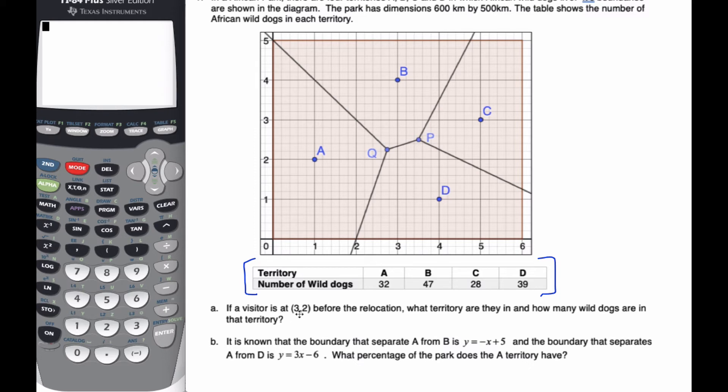If a visitor is at (3,2) before the relocation, what territory are they in and how many wild dogs are in that territory? Well, they are here, and so they are in territory D, and so there are 39 wild dogs in there. It is known that the boundary separating A and B is y equals negative x plus 5, and the boundary that separates A from D is 3x minus 6. What percentage of the park does the A territory have? We want to find the percentage of this particular area.